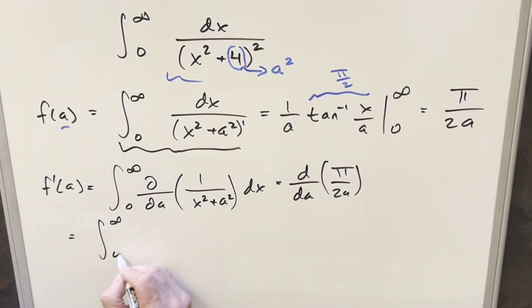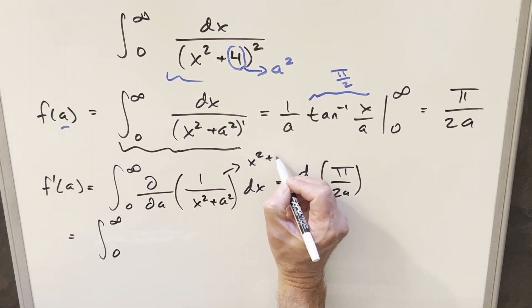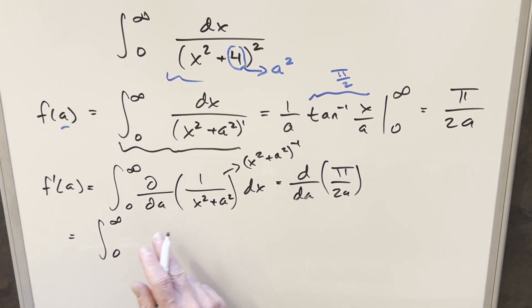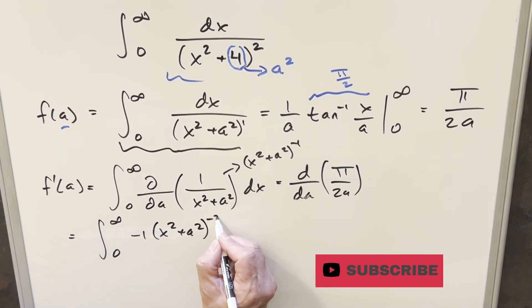Now, on the left side, when we do this, what's going to happen? We'll think of the whole thing. We'll think of this as x squared plus a squared to the minus 1. First, differentiating this with respect to a, we're going to use power rule. So it's going to be like minus 1, x squared plus a squared to the minus 2.